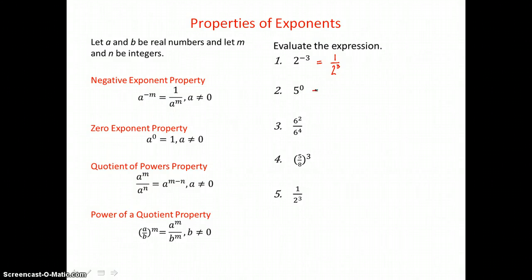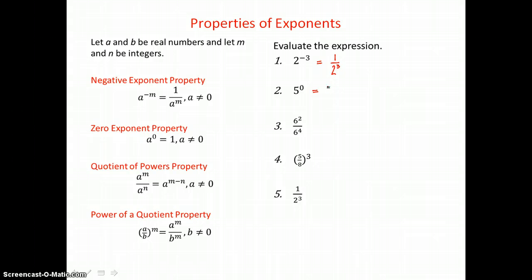In example 2, we have 5 raised to the 0 power. We'll use our zero exponent property here because anything raised to the 0 power has a value of 1. No matter how complicated, if it's raised to the 0 power, it has a value of 1.